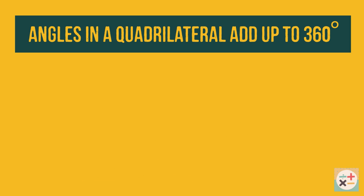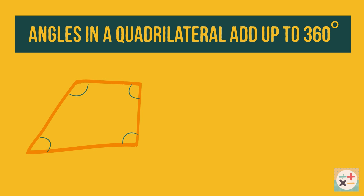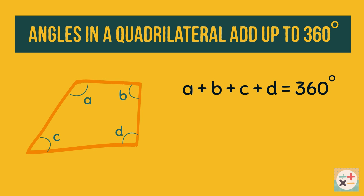Another rule is that angles in a quadrilateral — a shape with four sides — will always add up to 360 degrees. We can see this is true because we can divide the shape into two triangles, and each triangle has angles totaling 180 degrees.